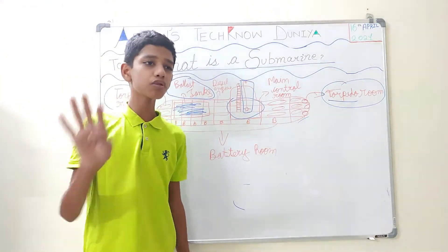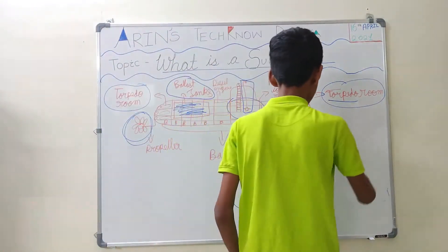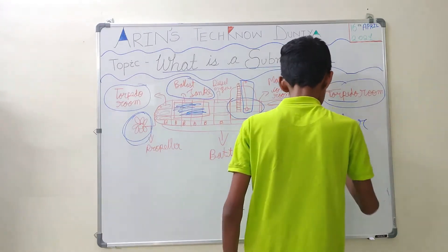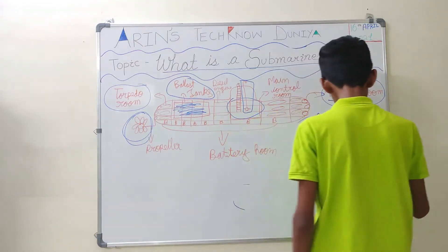There are many types of submarines like nuclear, diesel, electric. These are the two types.